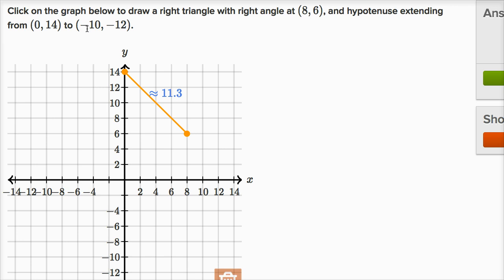And then we go from that point to negative 10 comma negative 12. X is negative 10, y is negative 12.